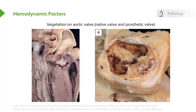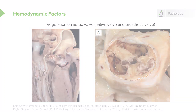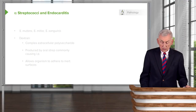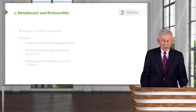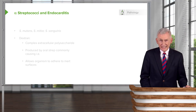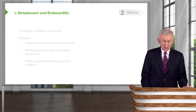Here are some examples of vegetations — one on the aortic valve, on a native aortic valve, and on a prosthetic valve.